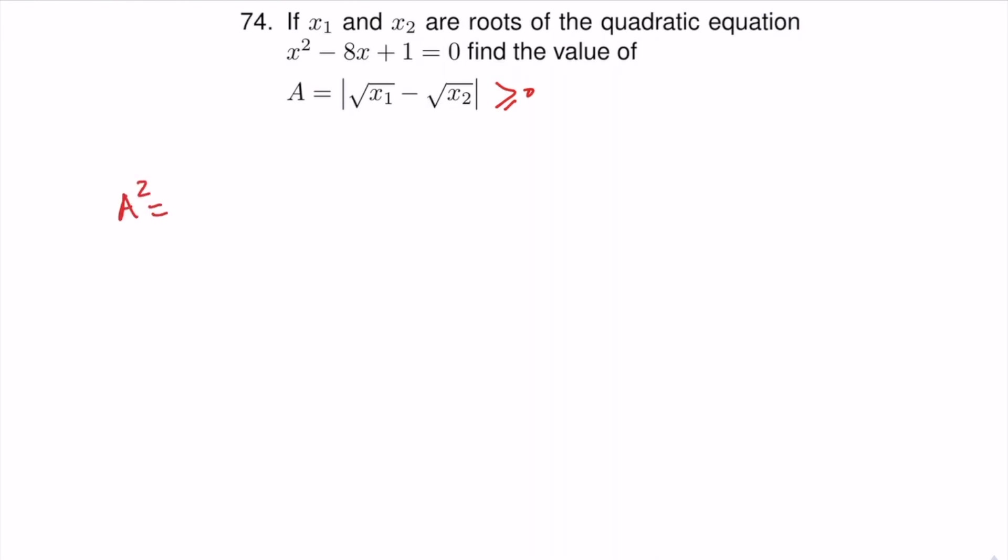A squared will be x1 plus x2 minus 2 times square root of x1 times x2. And if we call the sum of the two roots S and the product of the roots P, this will give us S minus 2 square root of P.